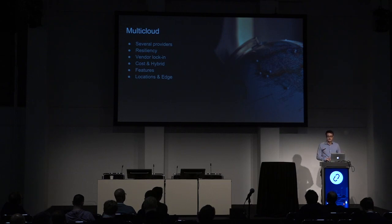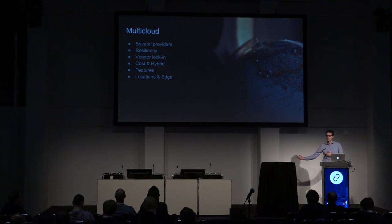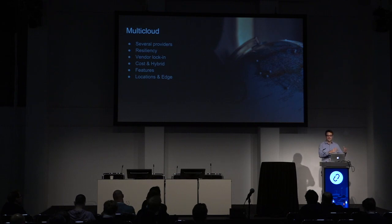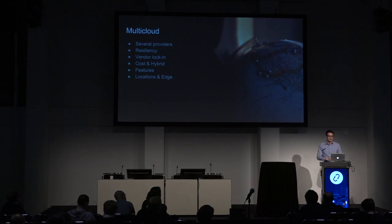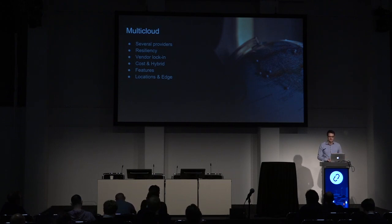Why do you want to do that? In a lot of cases it's about resiliency. You want to cover situations where one cloud has issues and you want your application or workloads to still work. So you have a second cloud, third cloud, or other clouds to cover for that. There are also vendor lock-in considerations — maybe you don't want to put all your eggs in one basket. You might have a great relationship with one company, but who knows, maybe they get acquired by a competitor or go out of business. So it's nice to already have other cloud infrastructure in place so you can just flip a switch and move on.